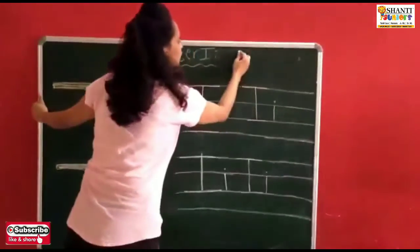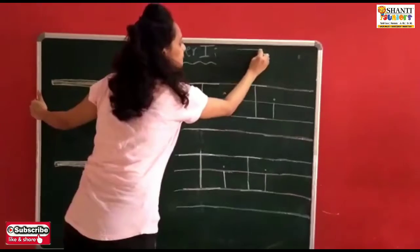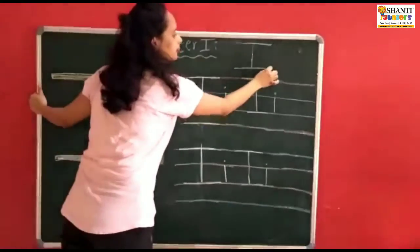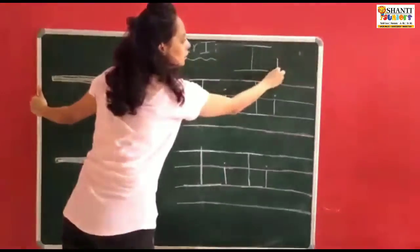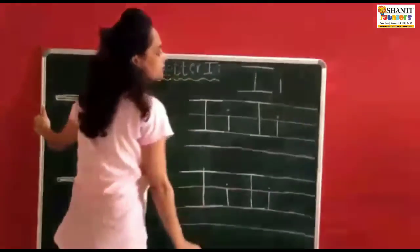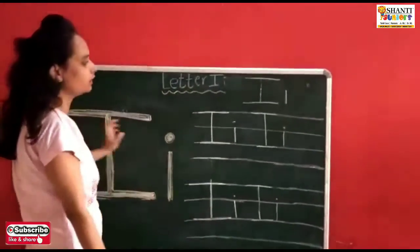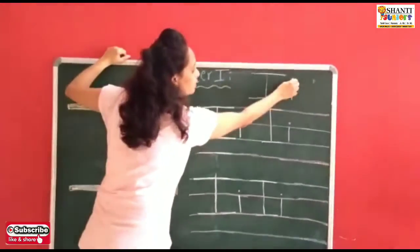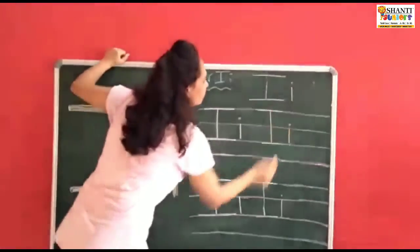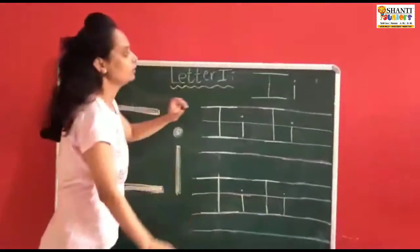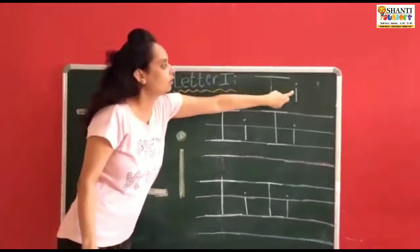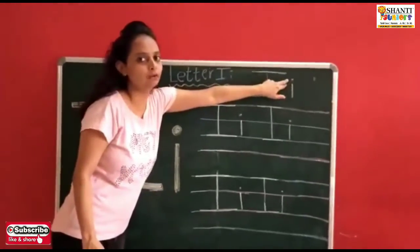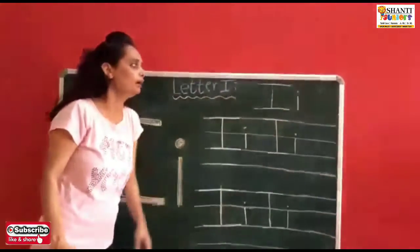One more time I am going to teach you: sleeping line, standing line, sleeping line, and short. And children, whenever you do the dot, the dot should be up on the line — don't put it here and there. You have to do the dot on top of the line only.